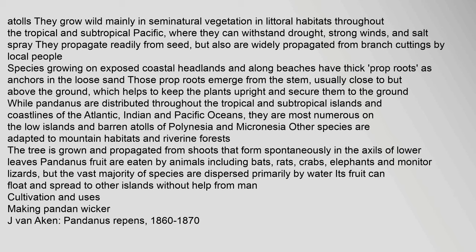Pandanus are distributed throughout the tropical and subtropical islands and coastlines of the Atlantic, Indian and Pacific Oceans. They are most numerous on the low islands and barren atolls of Polynesia and Micronesia. Other species are adapted to mountain habitats and riverine forests. The tree is grown and propagated from shoots that form spontaneously in the axils of lower leaves. Pandanus fruit are eaten by animals including bats, rats, crabs, elephants and monitor lizards, but the vast majority of species are dispersed primarily by water, as its fruit can float and spread to other islands.